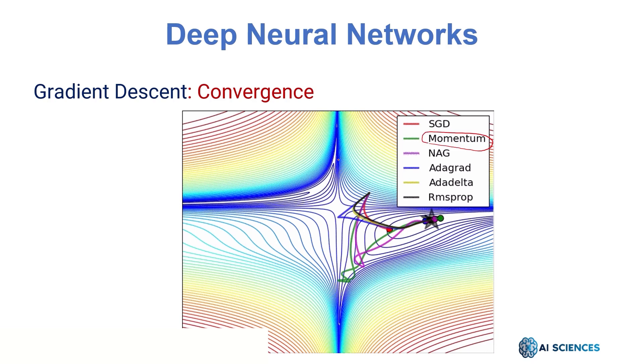This is an animation taken from Stanford. This is basically showing the convergence rate of different kinds of algorithms. So this is stochastic gradient descent, this is momentum, AdaGrad, AdaDelta, RMSprop, and there are several others. They're just comparing how fast each algorithm is performing towards the global minimum.